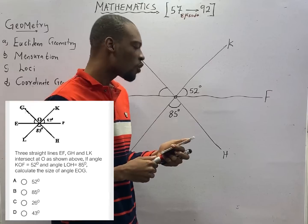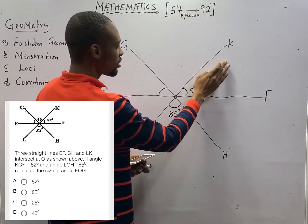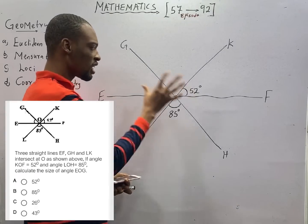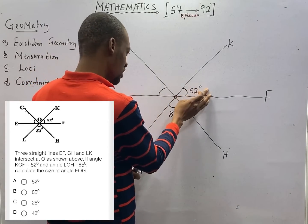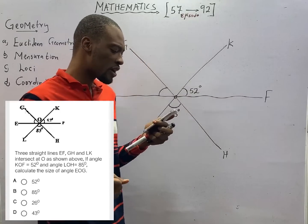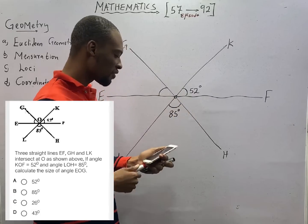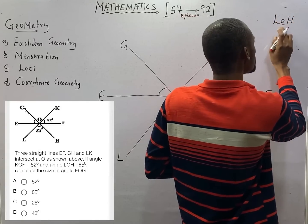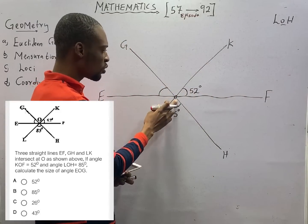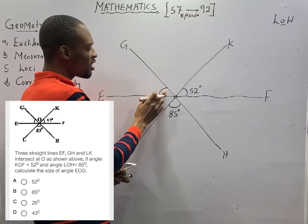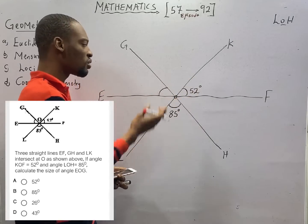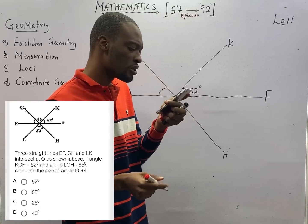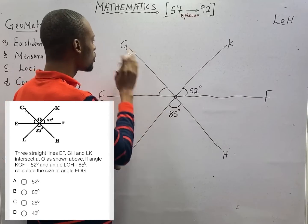Angle KOF is 52 degrees, and angle LOH is 85 degrees. When you are given three letters like L-O-H, the angle is always at the middle letter — so the angle is at O. We are asked to calculate the size of angle EOG. Let's call it S.